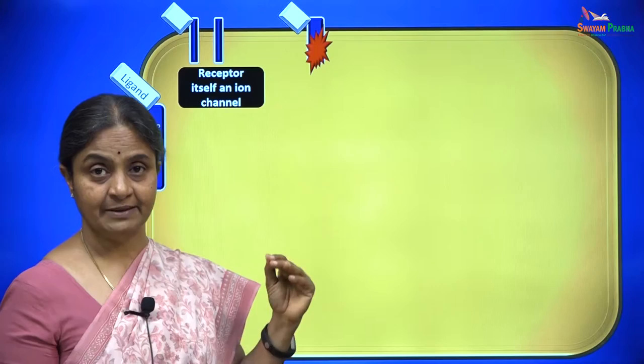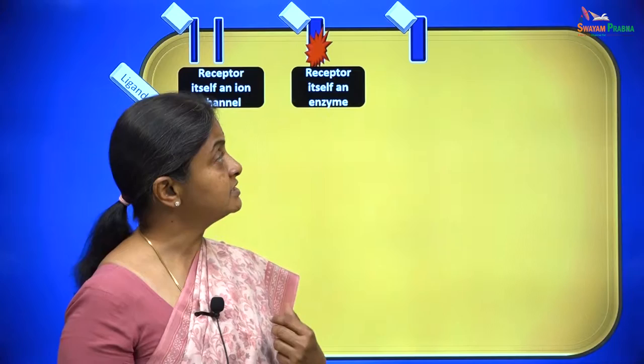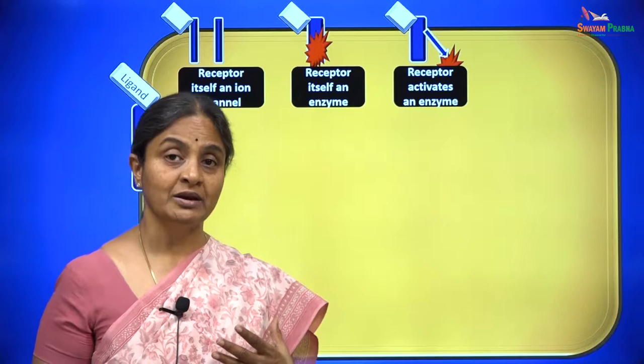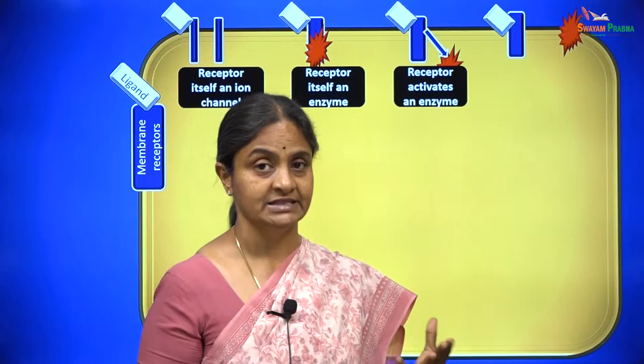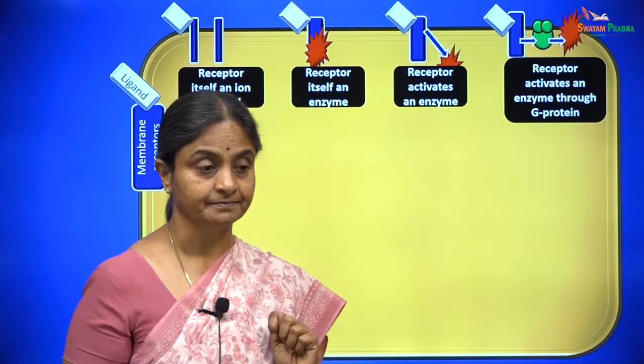The second type is where the receptor itself is an enzyme and ligand binding activates that enzyme. In the third type, the ligand-receptor combination activates an enzyme within the cell. The fourth type is where the ligand-receptor combination activates a membrane enzyme through a G-protein — and these receptors are called G-protein coupled receptors.